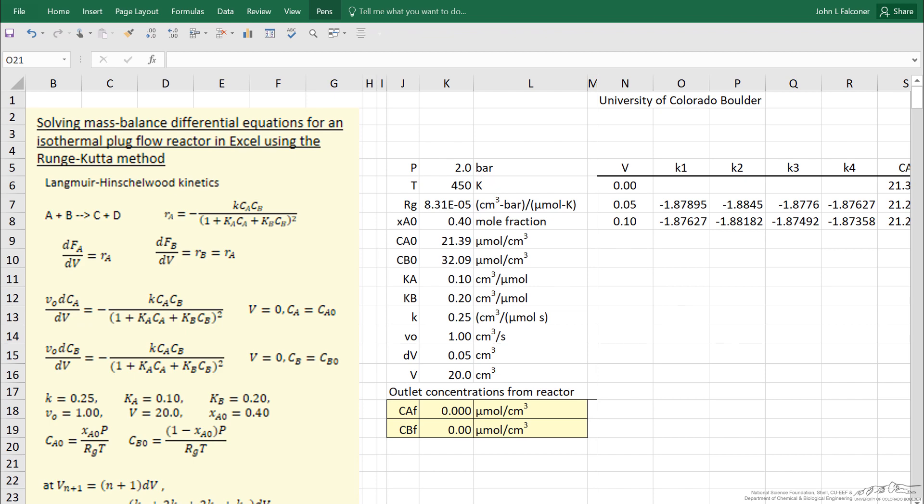We're looking at a reaction of A plus B goes to products, a gas phase reaction. I'm given a rate expression—it's a Langmuir-Hinshelwood type rate expression for a catalytic reaction.